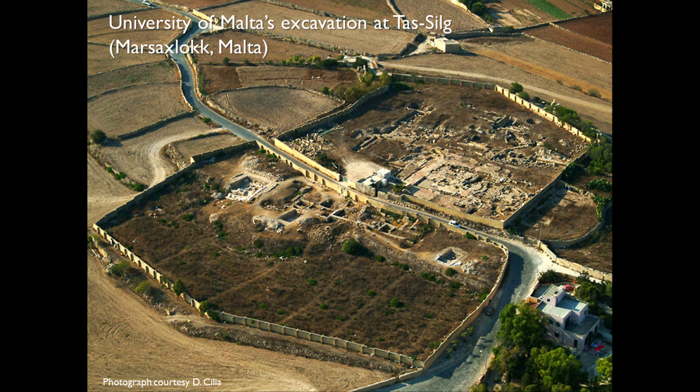The site known as Tasilch is located in the southeast of Malta, overlooking Marsaschlok Bay to its south. Its name derives from a nearby chapel dedicated to Our Lady of the Snows, Tasilch. However, the actual hill upon which the site is located is called Saberica.